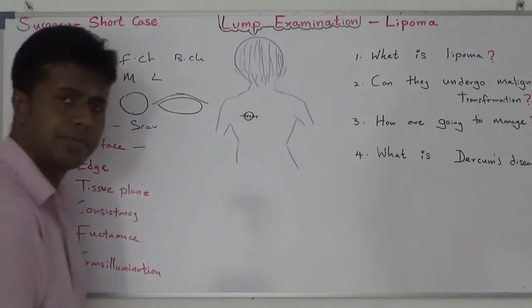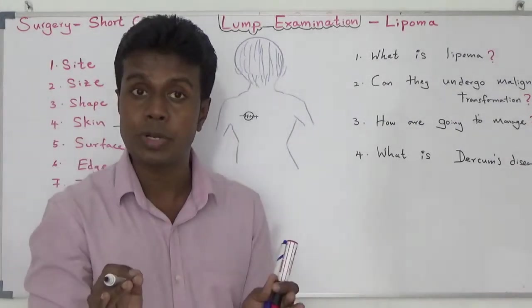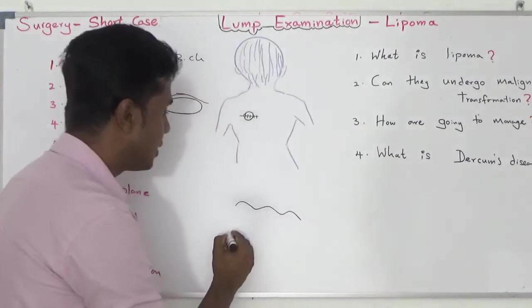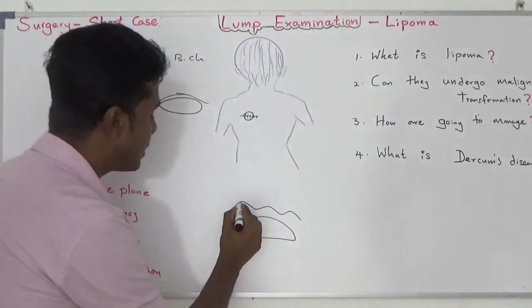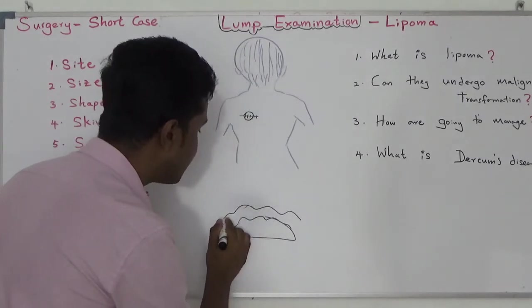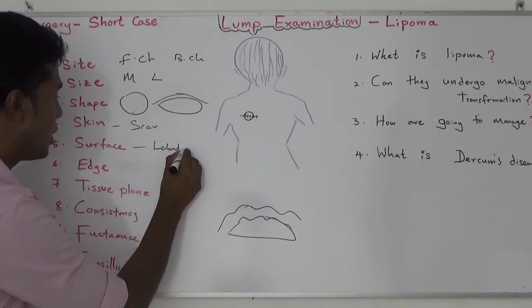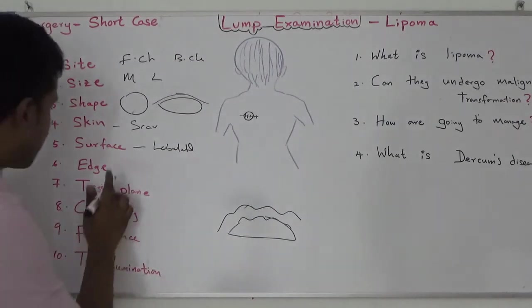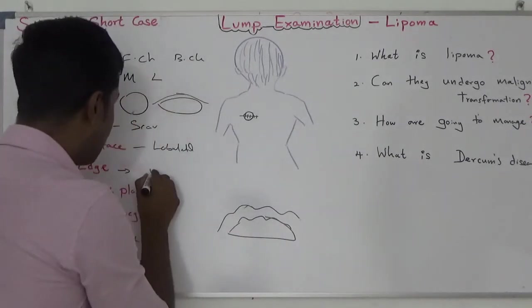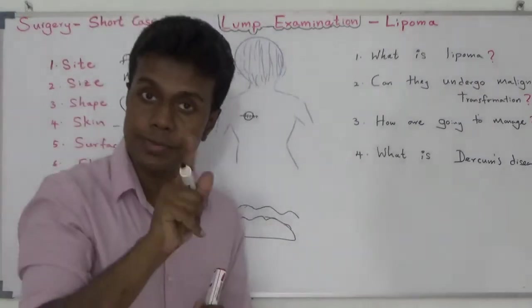Surface: The surface is usually lobulated. Why? Because of the lipid lobules, they cause a lobulated surface. So the surface will be lobulated.